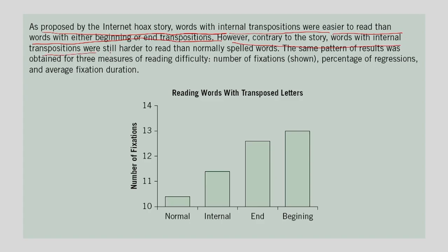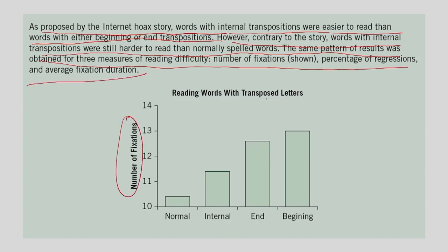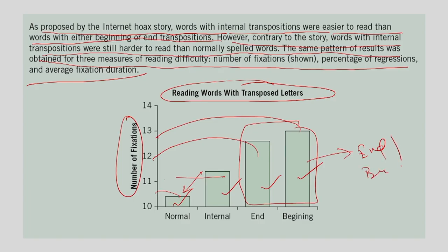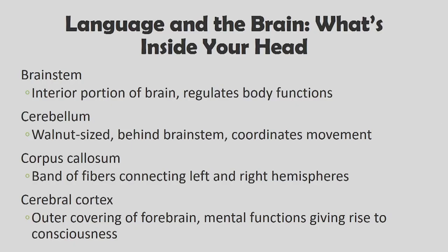If transpositions are made at the beginning or end of a word, fixations and regressions increase significantly. Internal transpositions cause fewer fixations. This demonstrates the role of saccades and fixations in reading. This is another interesting research finding in psycholinguistics using experimental methodology. Now let us look at what role the brain plays in language processing. The brain stem is the interior portion that regulates body function. The cerebellum, located behind the brain stem, coordinates movement and is common across animals, birds, and humans.